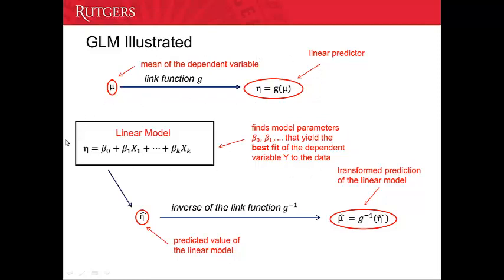In the second step, we use eta, the linear predictor, to formulate a linear model. It models the relationship between eta and the independent variables x1, x2, x3, etc. We use independent variables to predict the dependent variable y, and eta acts as an intermediate in the system. After applying the linear predictor, the relationship between the independent variable and eta is linear — eta equals a linear combination of the independent variables.